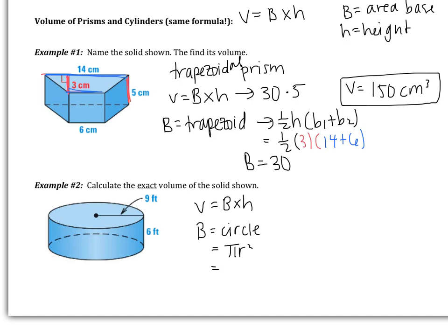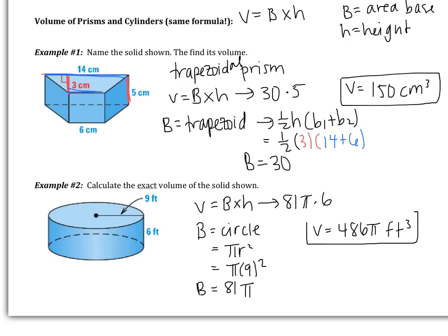Let's see how we did. The area of the circle is pi r squared, so pi times 9 squared, giving an area of the base of 81 pi. Going back to our volume: area of the base is 81 pi, multiplied by the height of the cylinder, which is 6. That gives a volume of 486 pi feet cubed. This is the exact answer — I want your answer in terms of pi, not as a decimal.